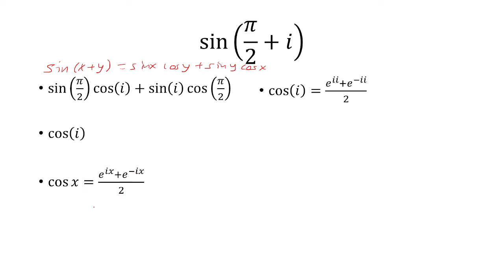So if I replace x with i, I have e to the i squared plus e to the negative i squared over 2, which i squared is just negative 1. So this is e to the negative 1 plus e to the first power over 2, and if you want, this simplifies to 1.54.